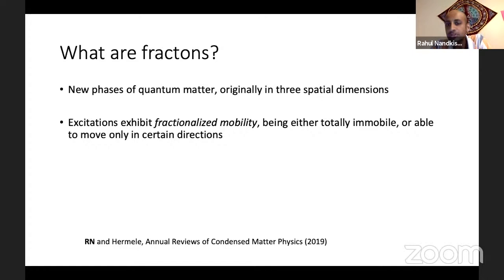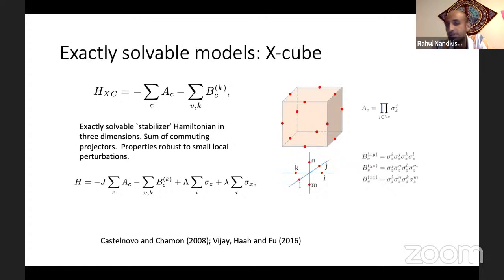Originally, fractons were inspired by quantum information and written down in three space dimensions, but now we know that there's nothing magic about three space dimensions. The key thing about fractons is that they exhibit fractionalized immobility. There are excitations which are either totally immobile under their own dynamics, or they can move only in certain directions. It's easiest to illustrate this with exactly solvable models, and the nicest exactly solvable model is the X-cube model.